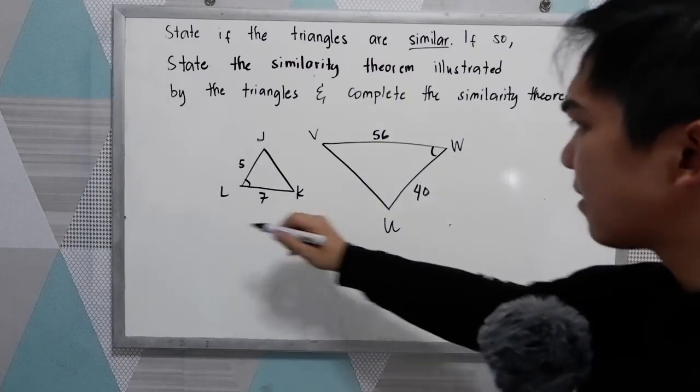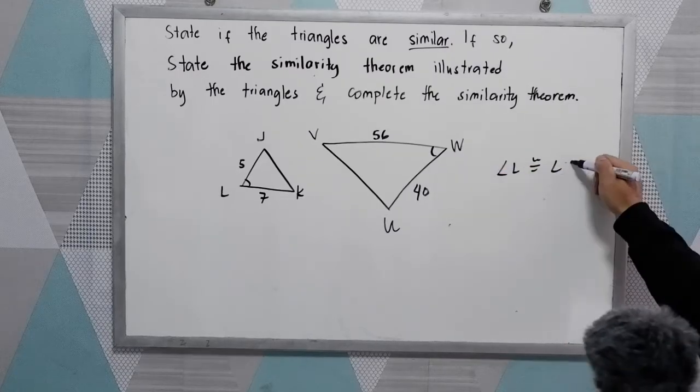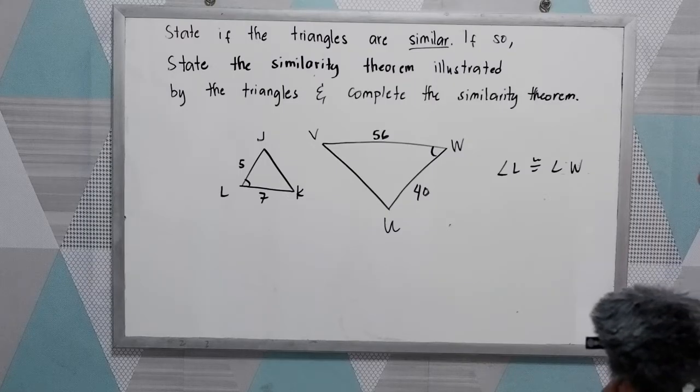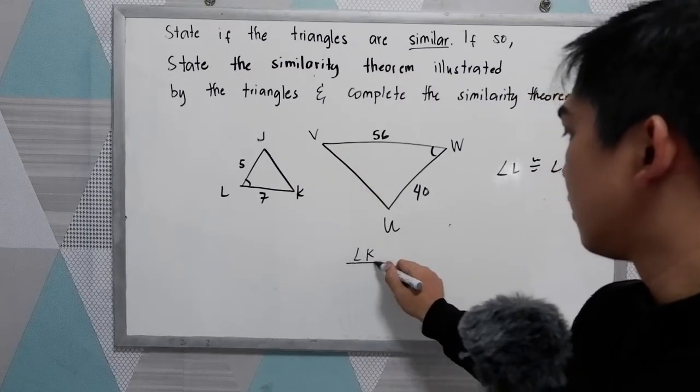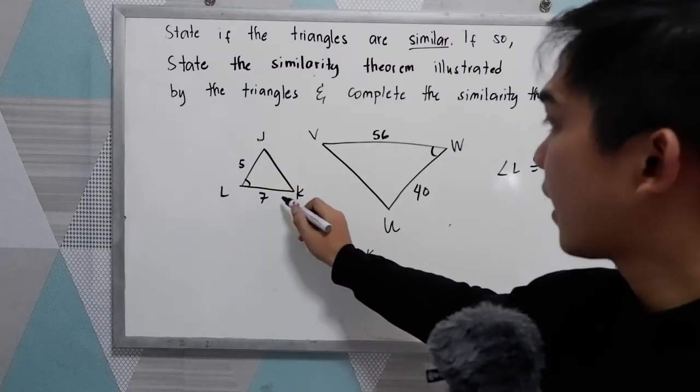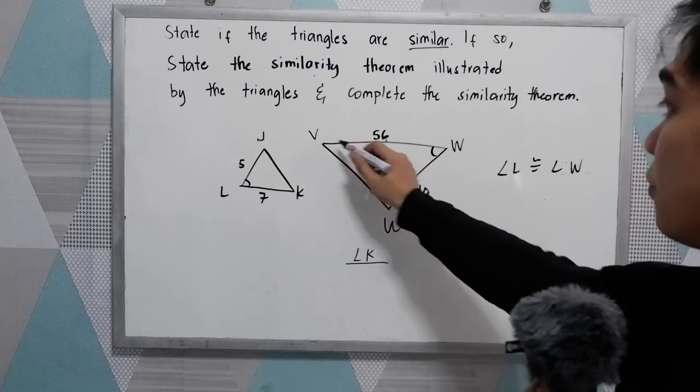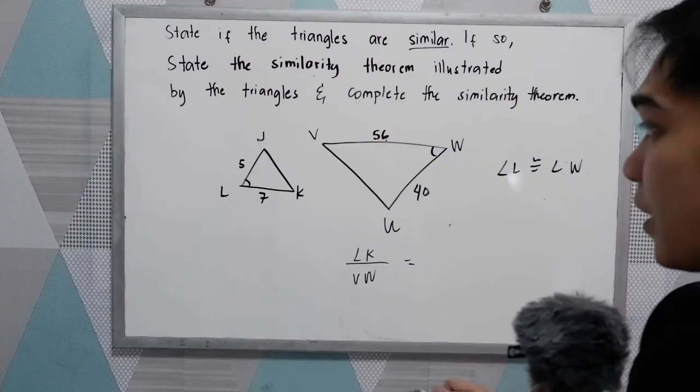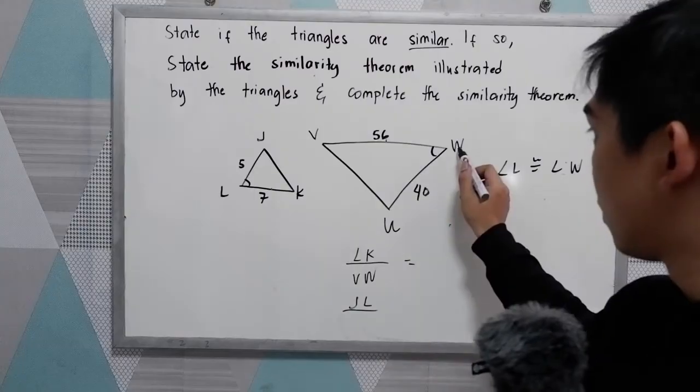We know that angle L is congruent to angle W. Now let's find the corresponding sides. LK corresponds to VW, and JL corresponds to WU.